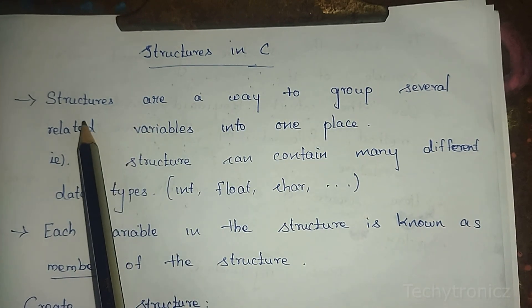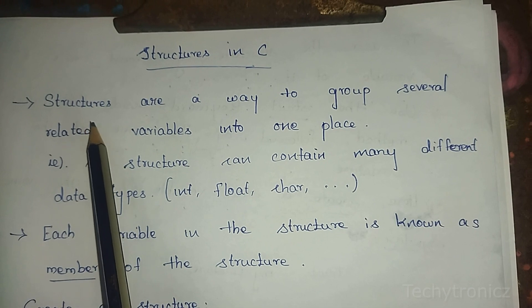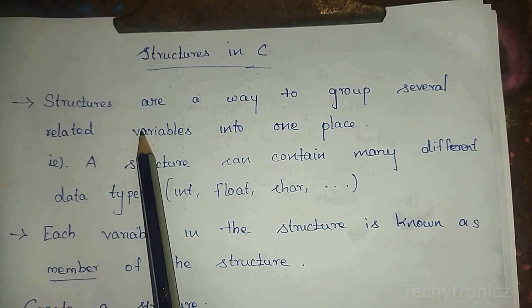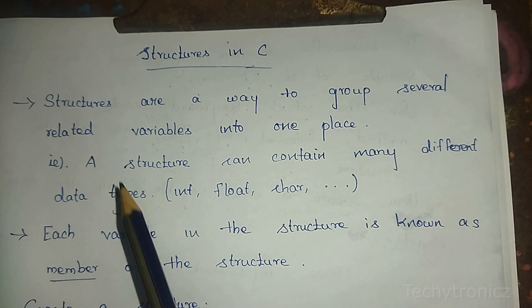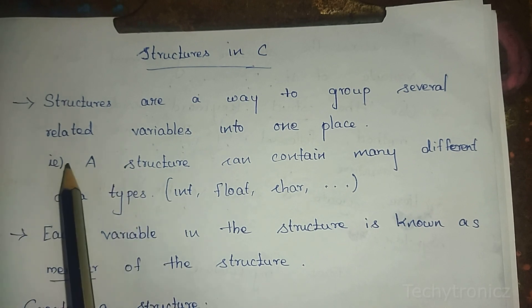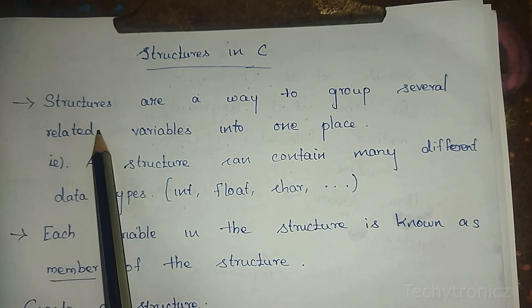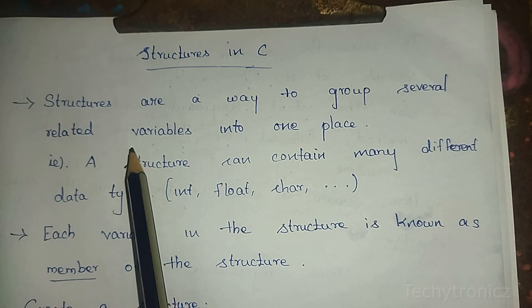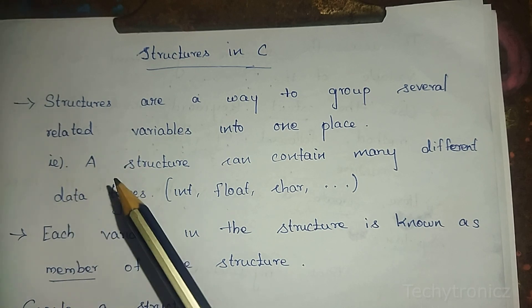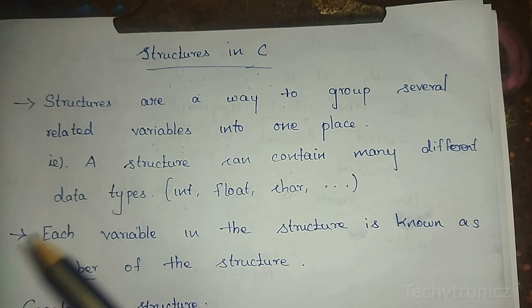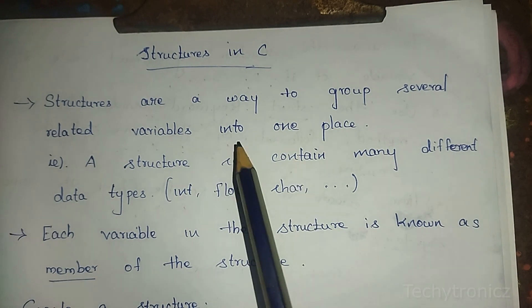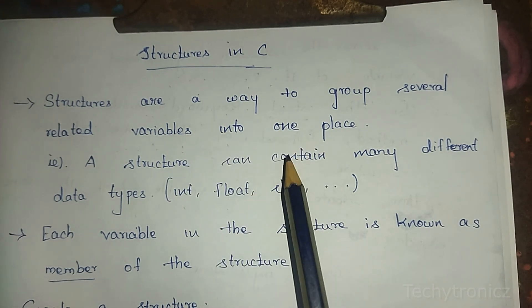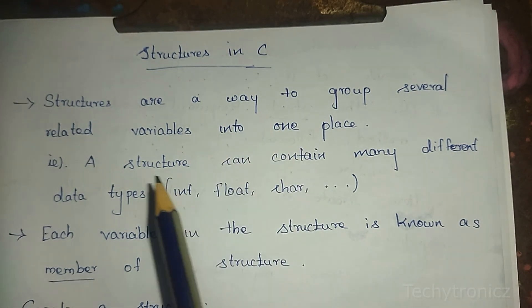You already know about arrays. An array is a collection of the same data type. But in structures, we can group several related variables of different data types — we can store different data types into one place, one storage place, using different data types.